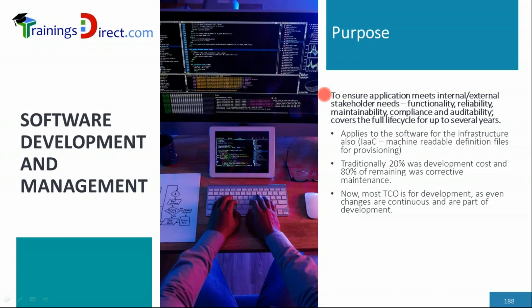Software development and management is a practice — there may even be a dedicated software development department. Its purpose is to ensure that software applications meet internal and external stakeholder needs for functionality, reliability, maintainability, compliance, and auditability. It covers the full lifecycle for up to several years, including maintenance for bug fixing, feature improvements, and application upgrades, as well as writing deployment scripts for live environments.